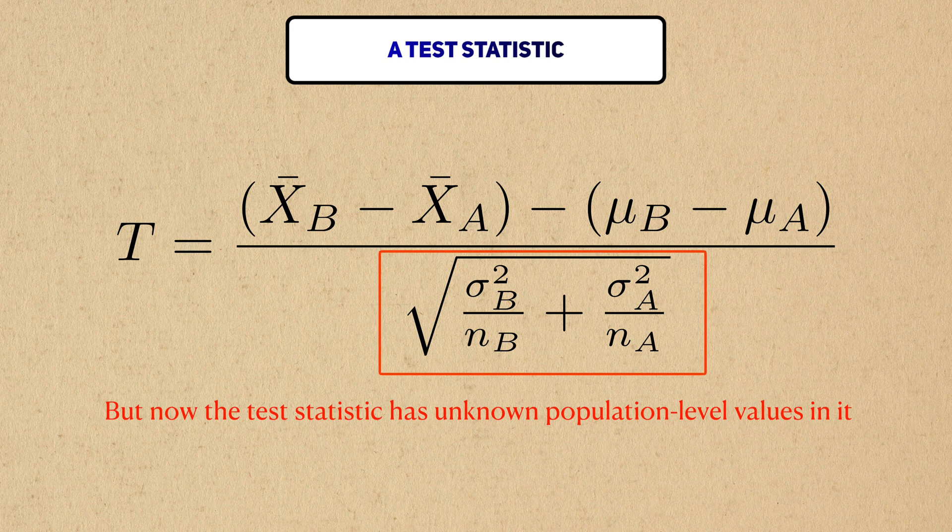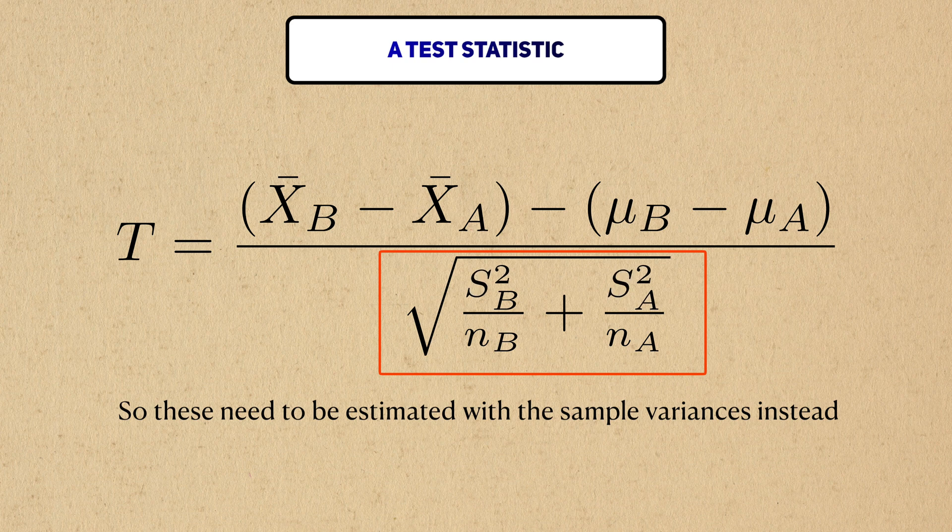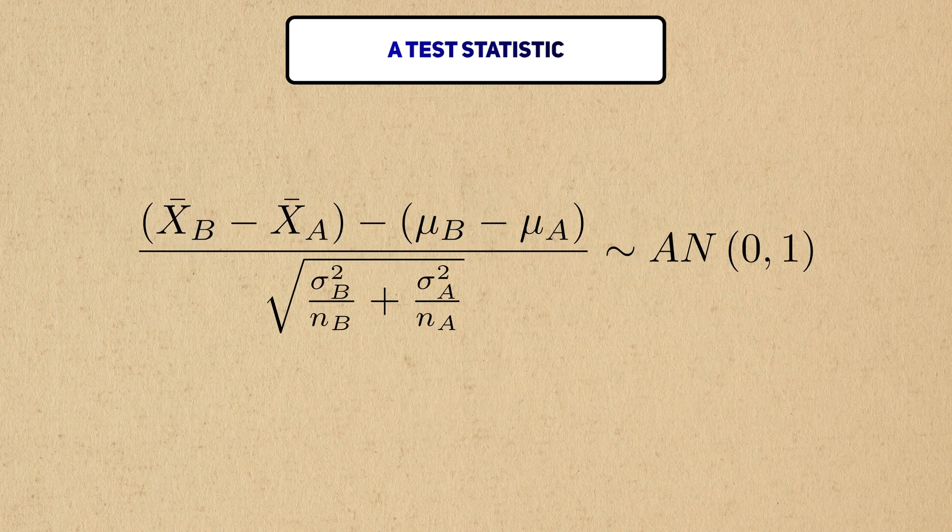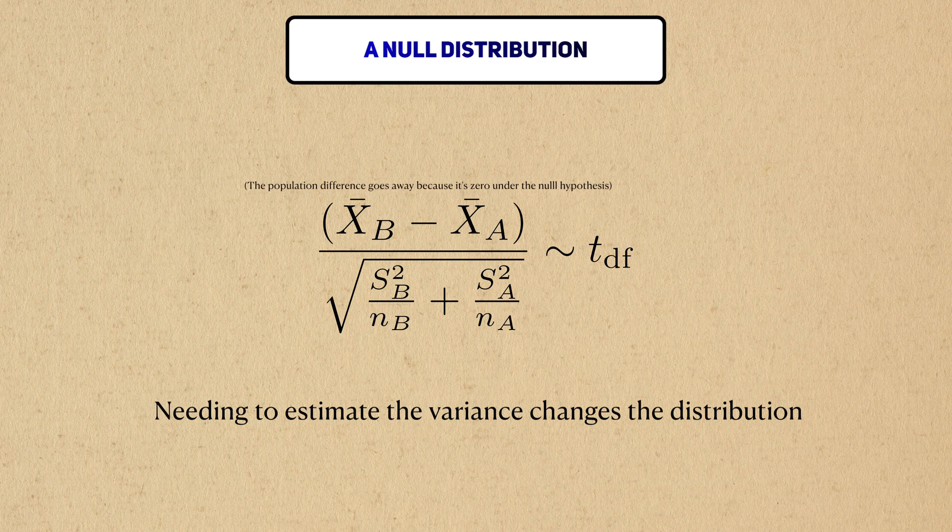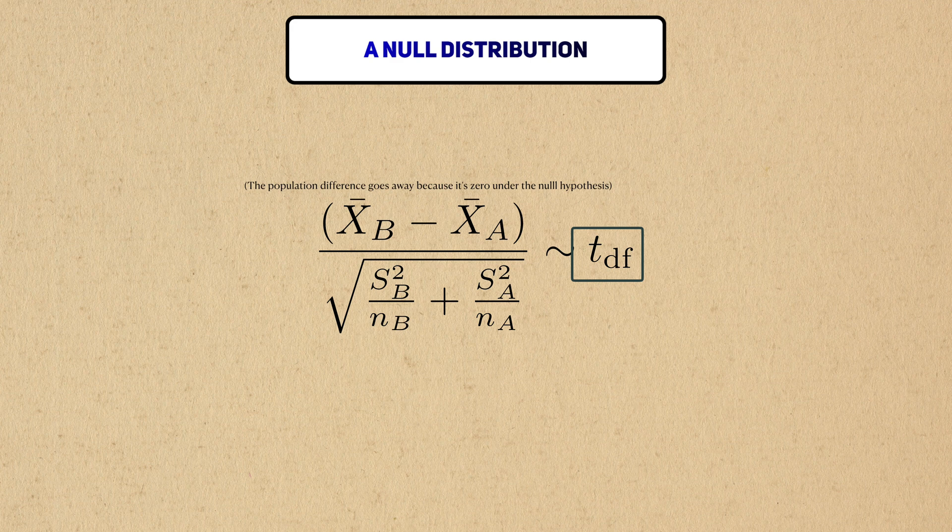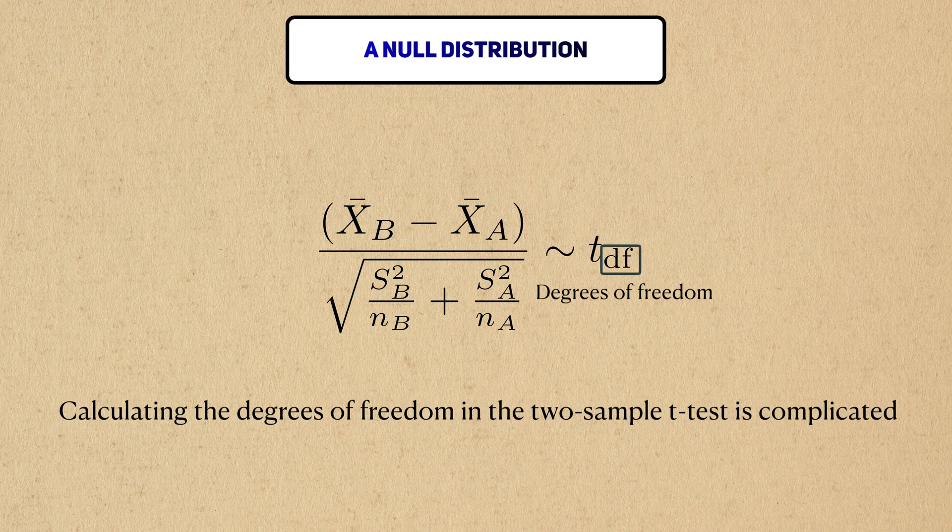But to do this calculation, we need to know the population variances, which we almost never know, so we need to estimate them instead. Since we need to estimate the variances, the sampling distribution is no longer a standard normal, but a t-distribution instead. T-distributions are parameterized by the mysterious degrees of freedom. Unlike the one-sample case, the calculation for the degrees of freedom in the two-sample case is complicated by the fact that there are two sample variances.